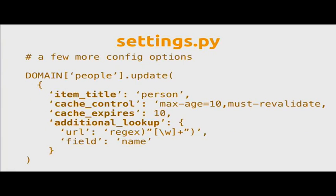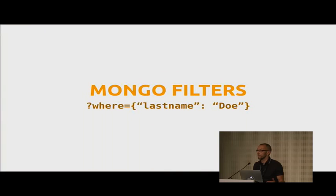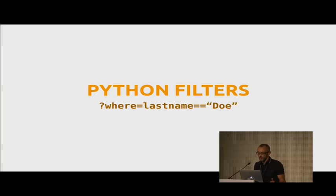A few more features — you can set cache control on an endpoint, additional lookups, and a lot of other stuff. Your clients can query the endpoints using a Mongo syntax, or a Python syntax if you prefer. For example, here we are querying the people endpoint for last name. If your client is written by you, you can use Mongo syntax. But if you expose your API to a website or to people who don't know Mongo, you can use a different syntax.